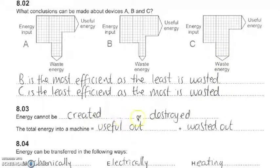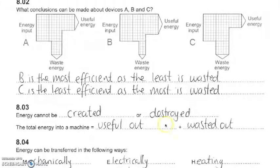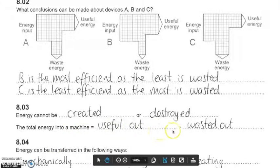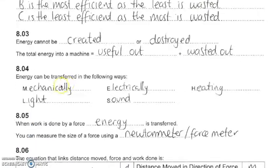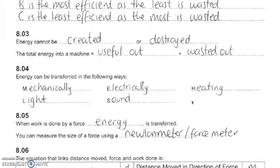Let's remind ourselves that energy cannot be created or destroyed, and the total energy into the machine has to equal the useful output plus the wasted output. Energy can also be transferred mechanically, via light, via sound, electrically, and via heating. Look back at a previous lesson where I talk about these ways of energy transfer.